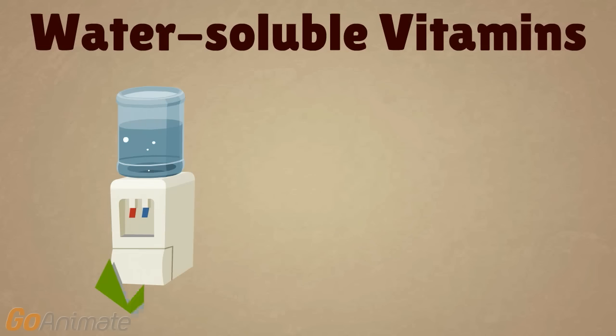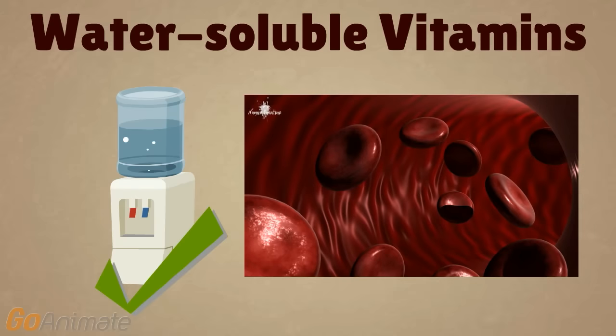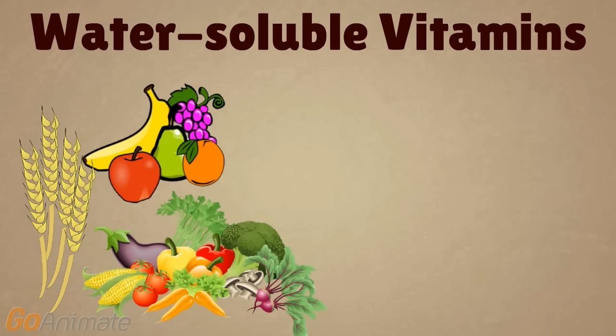Water-soluble vitamins dissolve in water and are able to move around freely in the body through the blood. These vitamins are found in the watery portions of fruits, vegetables, and grains.